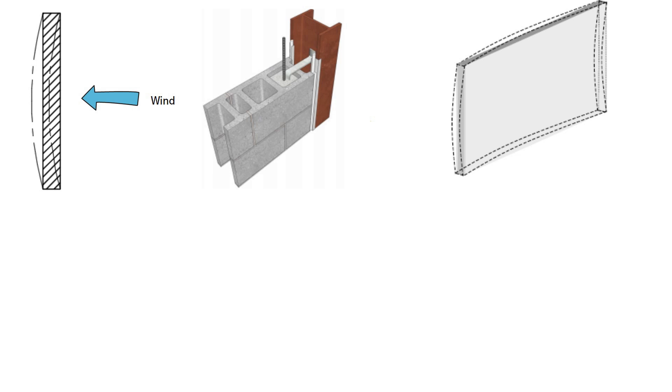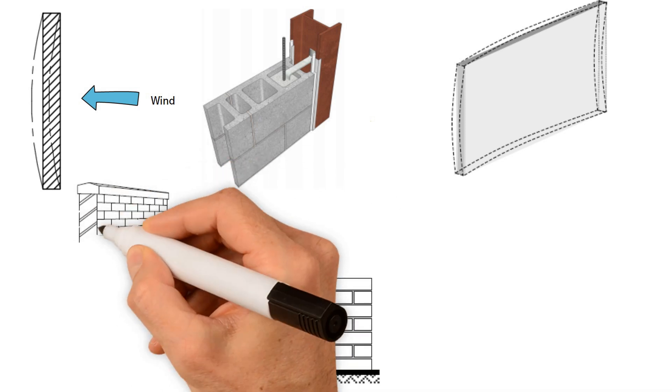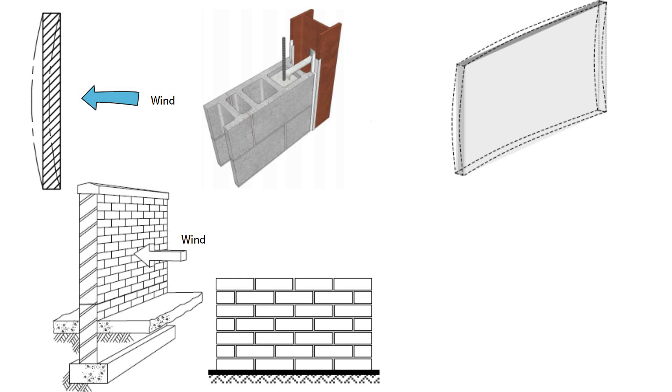Brickwork is stronger when spanning horizontally because of the interlocking of the bricks. Long walls without vertical supports, such as boundary walls, must depend upon only the vertical bending strength of the masonry.